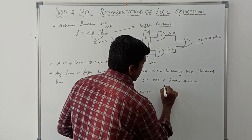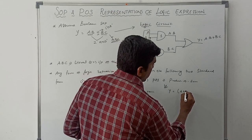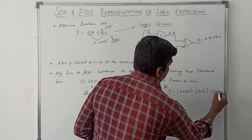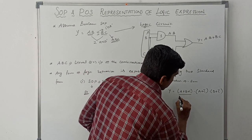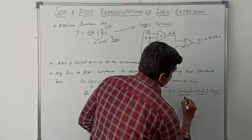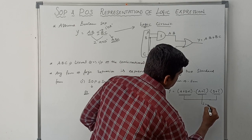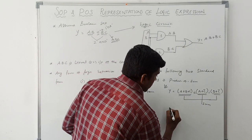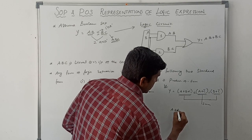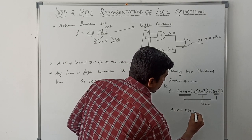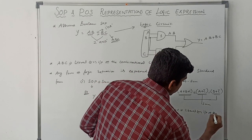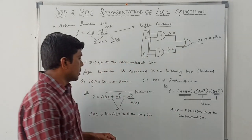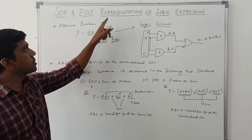Now coming to POS — Product of Sum. The example expression is y equal to (A plus B plus C) dot (A plus C-bar) dot (B plus C-bar). Here these terms are considered as sums, and the product of the sum variables gives the POS form. A, B, C are called literals or inputs of the combinational circuit. This is the SOP and POS representation of logic expressions.